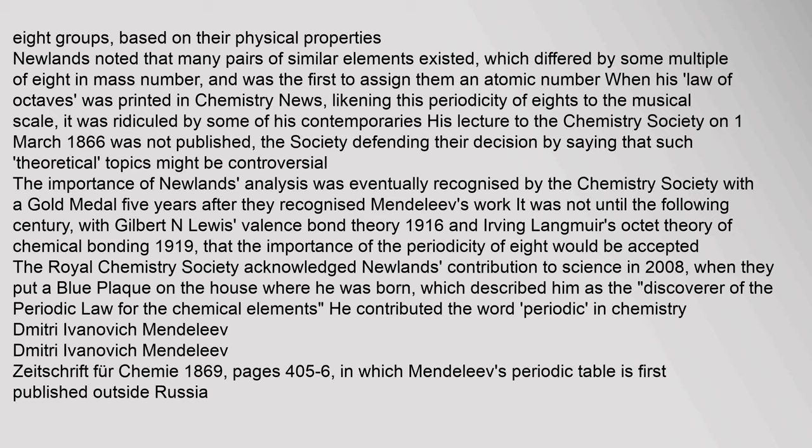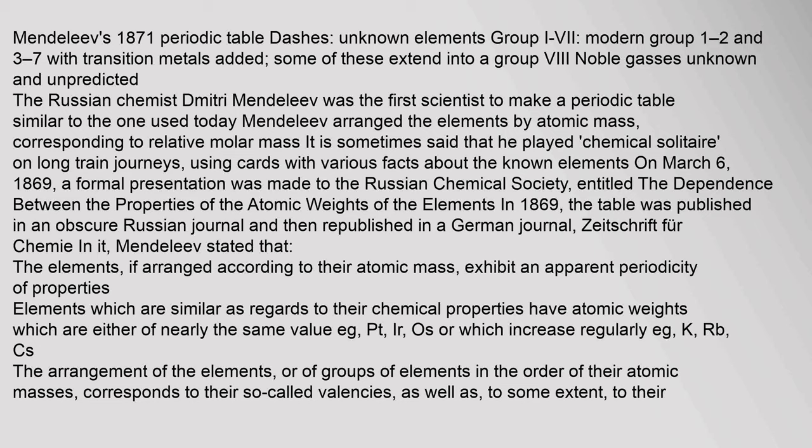Dmitry Ivanovich Mendeleev's periodic table was first published outside Russia in Zeitschrift für Chemie in 1869. Mendeleev's 1871 periodic table used dashes for unknown elements in Groups 1–7. The Russian chemist Dmitry Mendeleev was the first scientist to make a periodic table similar to the one used today, arranging the elements by atomic mass corresponding to relative molar mass. It is sometimes said that he played chemical solitaire on long train journeys, using cards with various facts about the known elements.